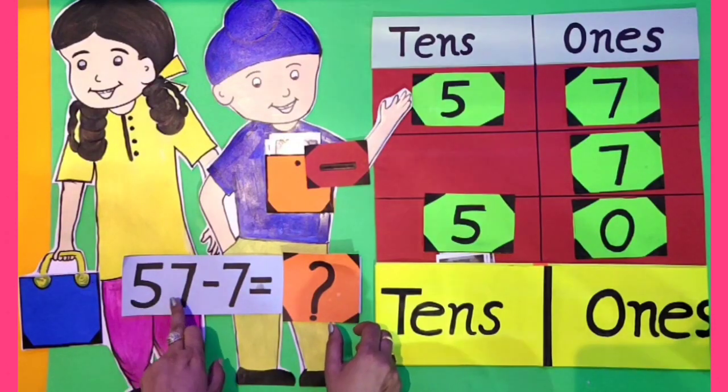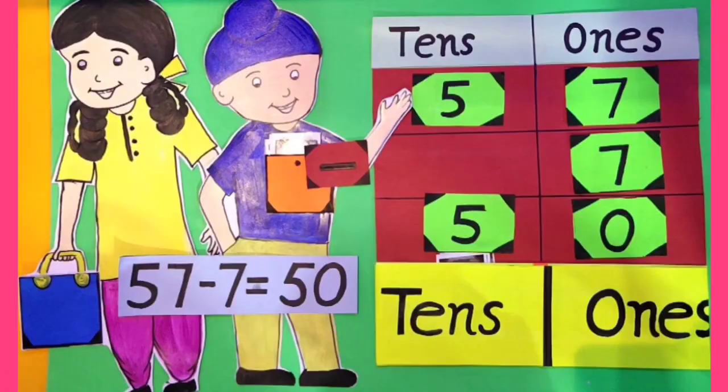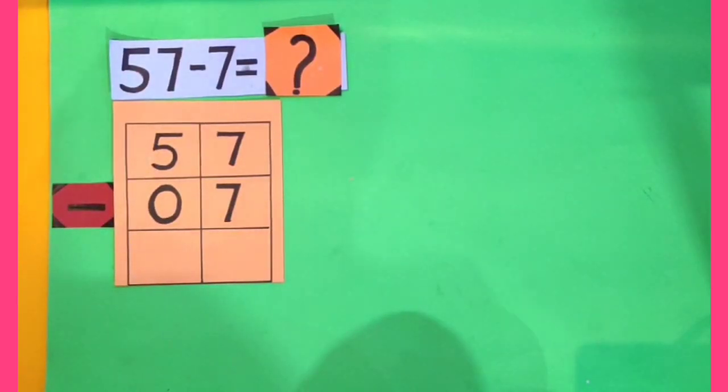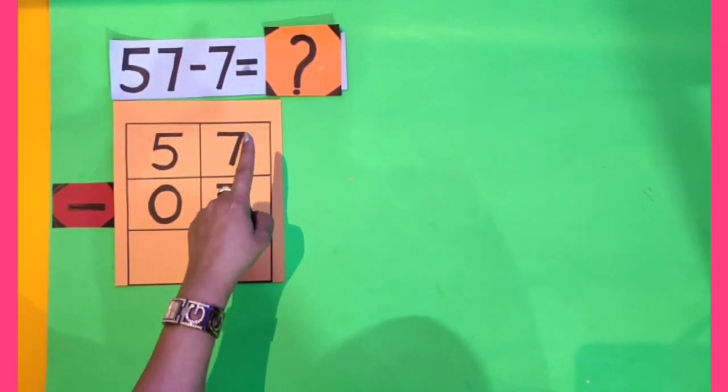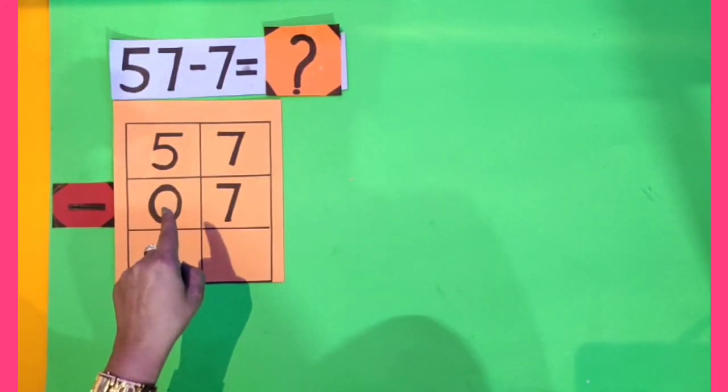So dear kids, we come to know that after subtracting 7 from 57, we get 50. So 57 minus 7 is equal to 50. Dear kids, we have already solved this sum with 2 methods. Now we will solve this sum with 3rd method.